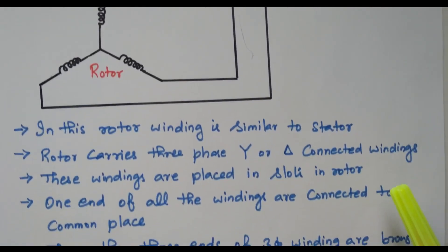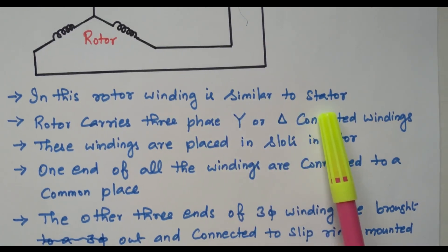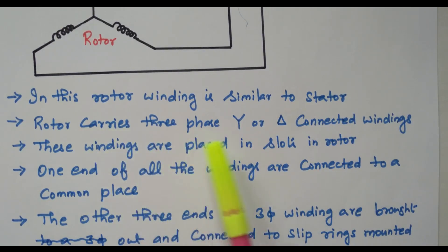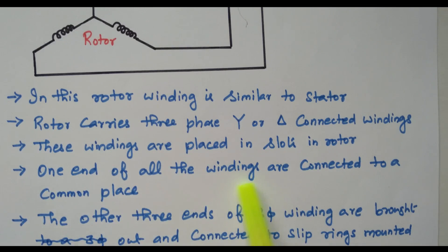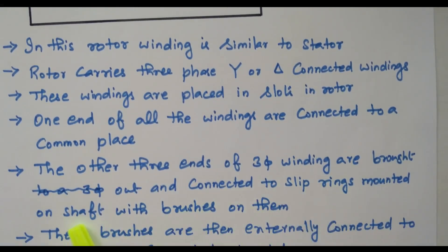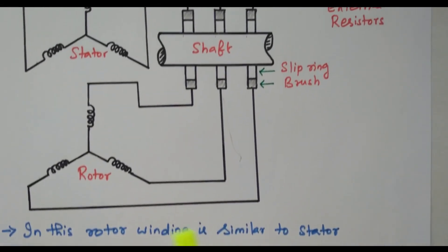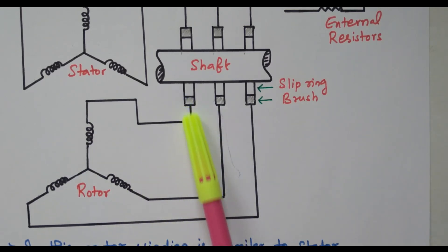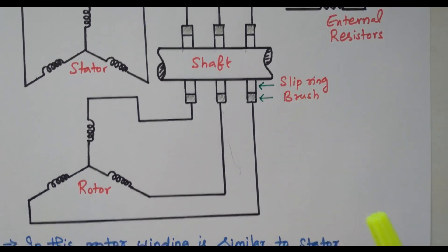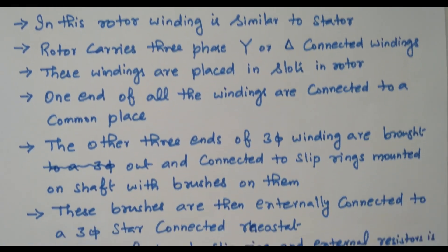Now we will see the description of the slip ring rotor. The rotor winding is similar to the stator winding. The rotor carries a three-phase star or delta connected winding placed in slots. One end of all three-phase windings is connected to a common point. The other ends of the three-phase windings are brought out and connected to slip rings mounted on the shaft with brushes on them. So one end is connected commonly, and the other end is connected through the slip rings and brushes.